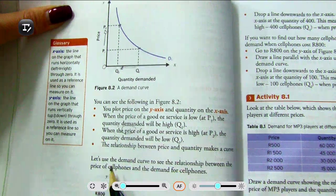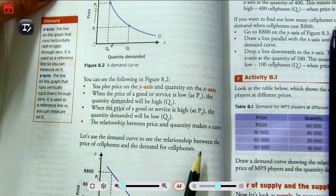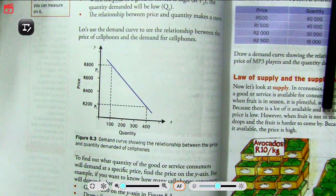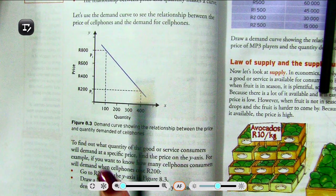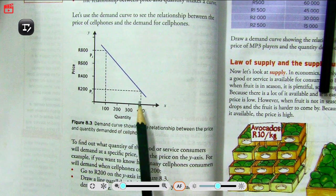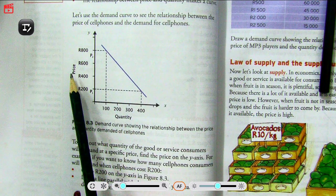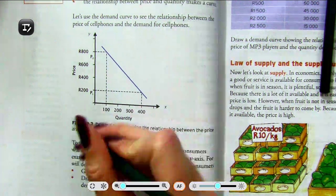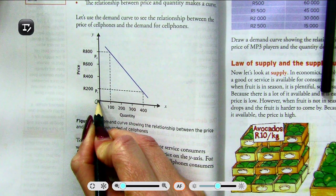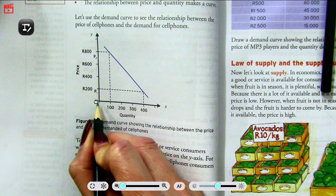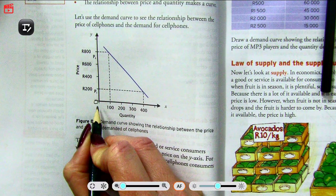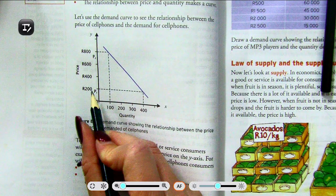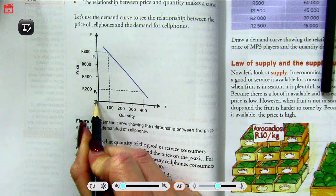Let's use the demand curve to see the relationship between the price of cell phones and demand for cell phones. We can see here, Grade 9s, my x and y-axis. We've labeled it price and quantity and plotted our points. Remember that where x and y meet is zero. Your smallest number must appear first, because when we count, we count 1, 2, 3, 4—we don't start at 100. So your smallest amounts must always be closest to zero.